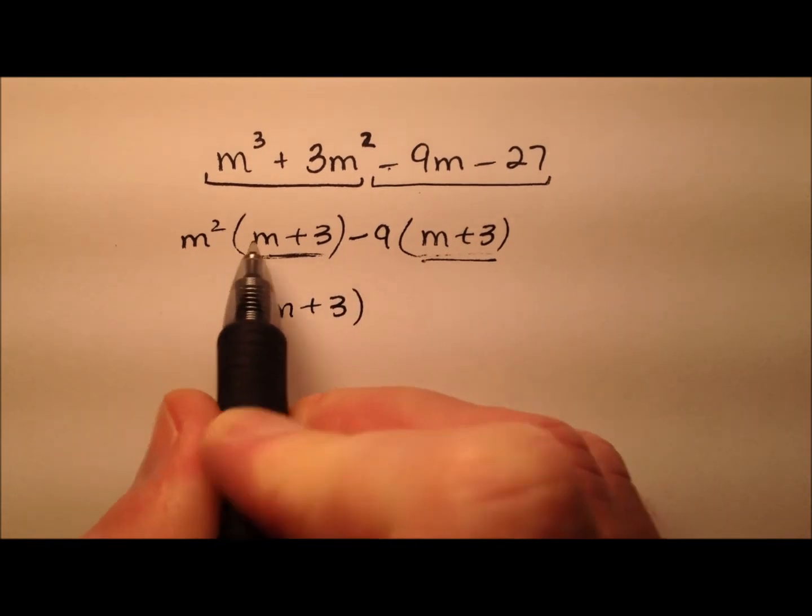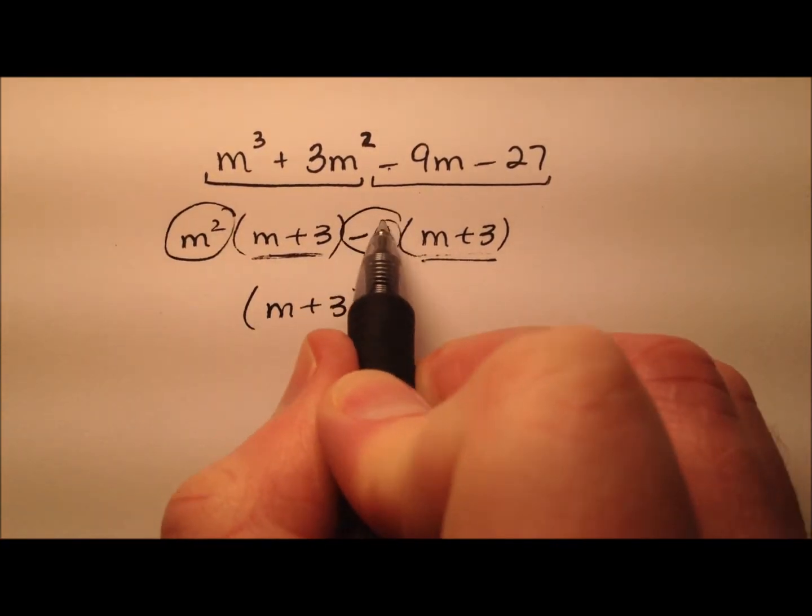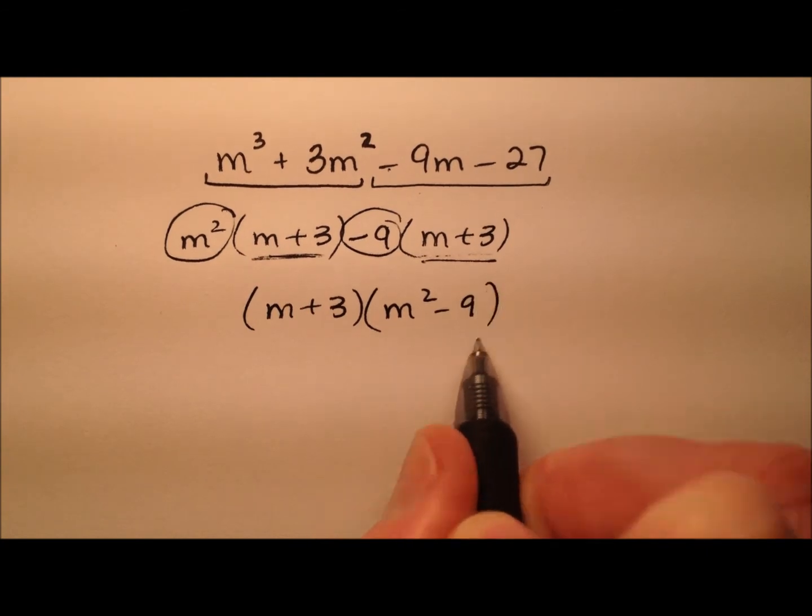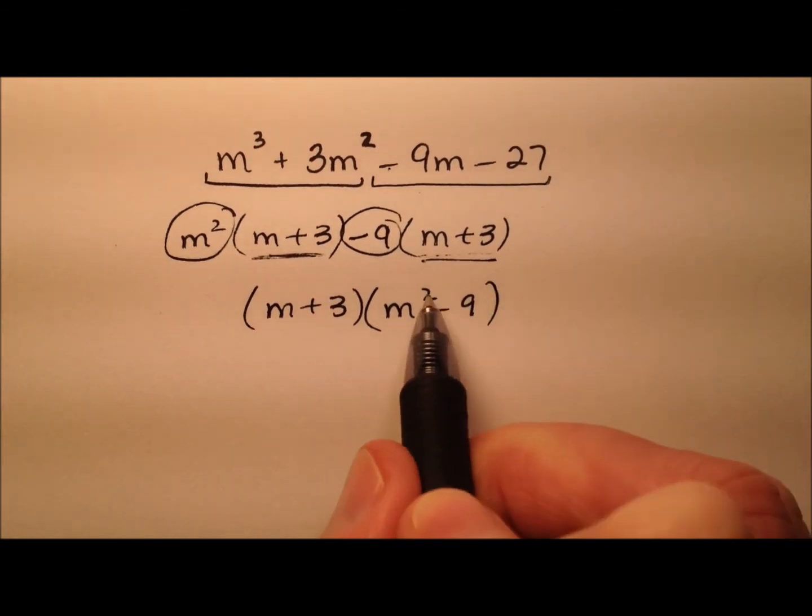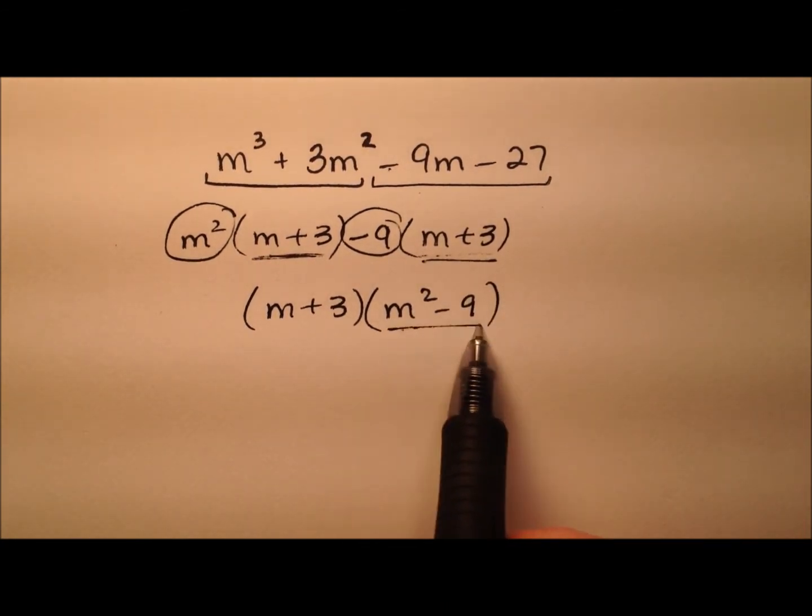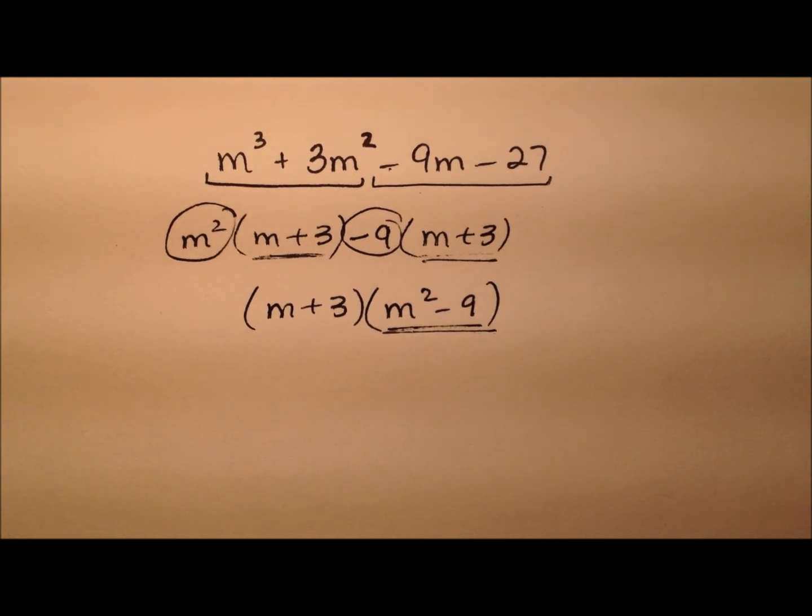So m plus 3 times, and we'll have for our other quantity, m squared minus 9. Well, what's nice about that is, it looks like we have a difference of squares factorization here with the m squared minus 9.